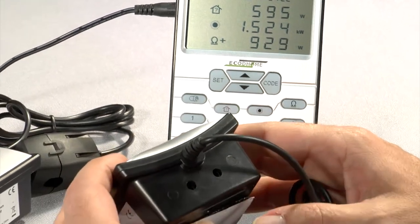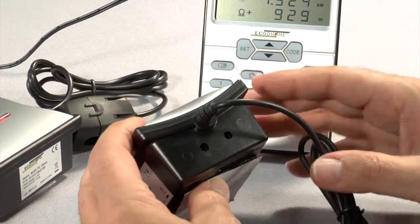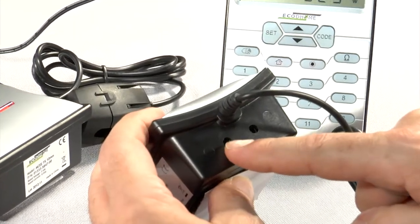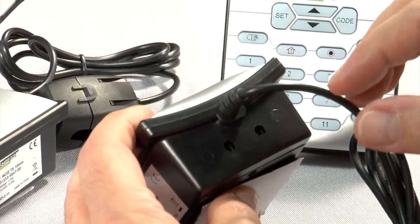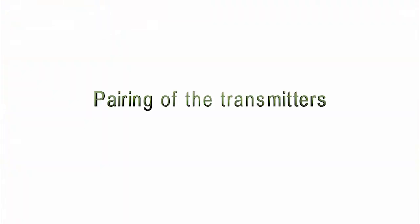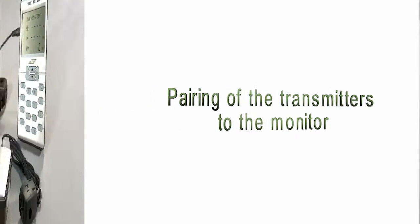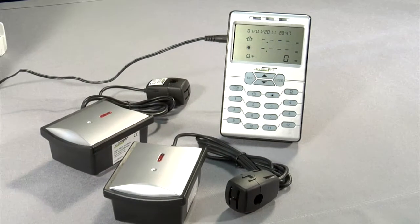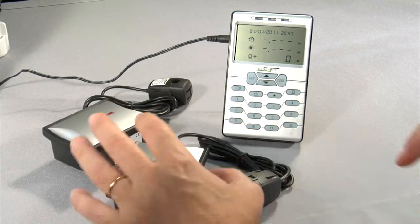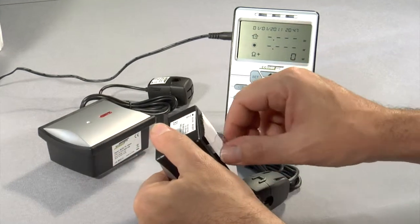The monitor can be configured for three-phase systems. As you can see on each transmitter, there are two additional holes to accommodate additional terminals. Then proceed with the desired combination of transmitters.